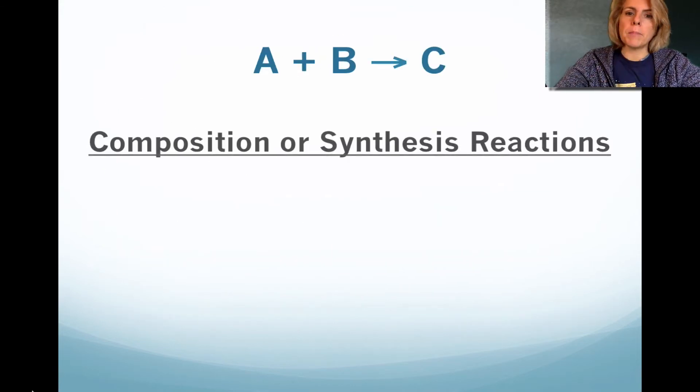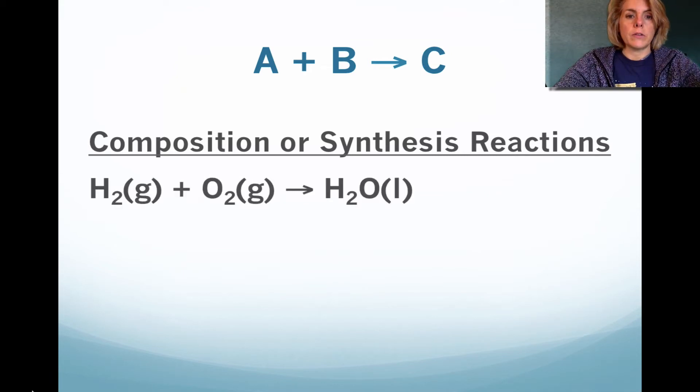The first type is composition or synthesis. This is probably the easiest type to remember. You're taking two or more substances, and you're only getting one product. An example of this would be making aspirin. You start with a couple different reactants, and together you get one product. Another example would be forming water. We could take hydrogen gas, you remember making that in the lab, and combine that with oxygen. We need a catalyst, but when we put those two gases together, we can get water.